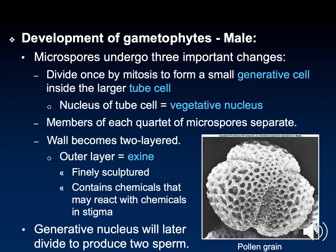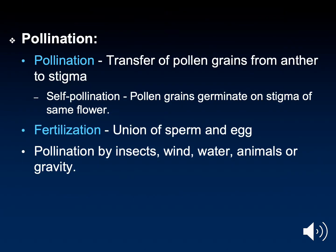The purpose of the generative cell is to produce two sperm. After the production of the pollen grains and the maturation of the ovule, pollination can happen. This is the transfer of pollen grains from an anther to a stigma, usually from one flower to another. Following pollination is fertilization — sperm from the pollen grain are sent through the stigma, through the style, to the ovule where the sperm can fertilize the egg.